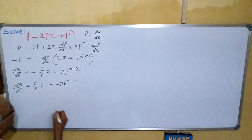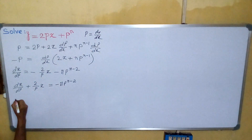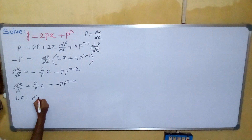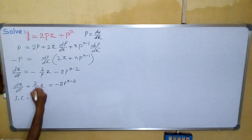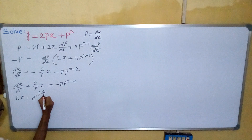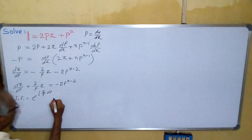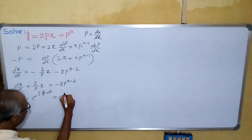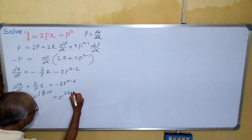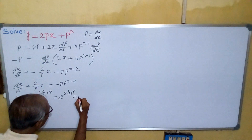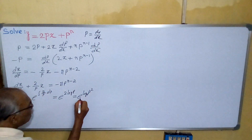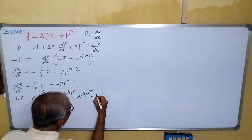So here, the integrating factor — what will be the integrating factor? As you know, in this type of function it is e to the power integral of 2/p dp, that equals e to the power 2 log p. This can be written as e to the power log p squared. Since the base is e, it equals p squared.